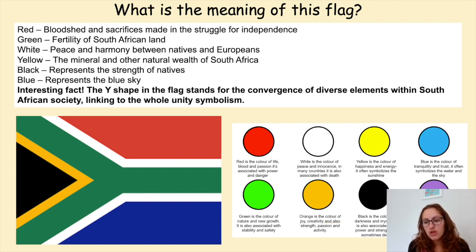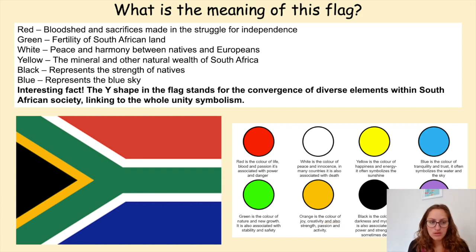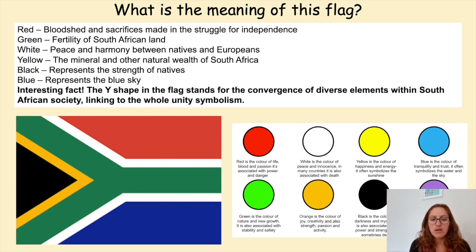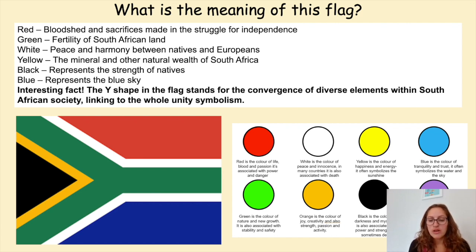To put this into perspective, I've got the South African flag as an example of what a flag might look like and what the colours on a particular flag mean. The South African flag has lots of colours on it and those colours are all there for a reason — they're not just randomly put. Red shows bloodshed and sacrifices made in the struggle for independence. Green represents the fertility of South African land. White represents peace and harmony between natives and Europeans. Yellow shows the mineral and other natural wealth found in South Africa. Black represents the strength of the natives and blue represents the blue sky. The Y shape in the flag stands for the convergence — the bringing together of diverse elements within South African society, showing how all the people within South Africa have come together, which is what the flag is trying to represent.